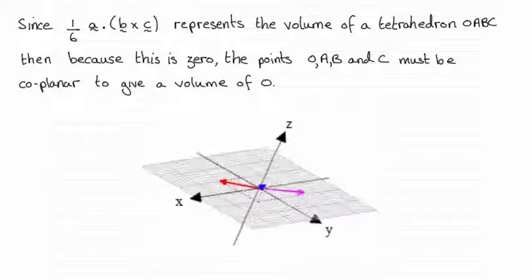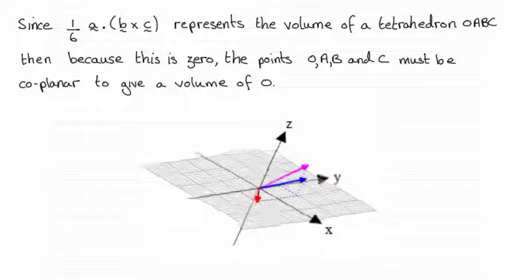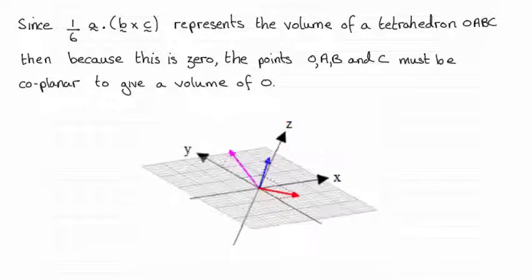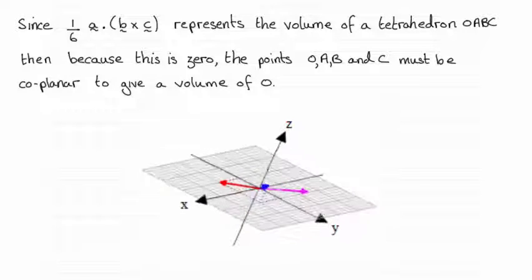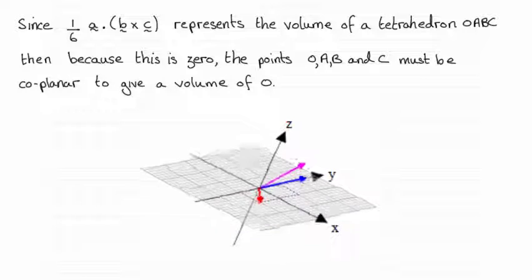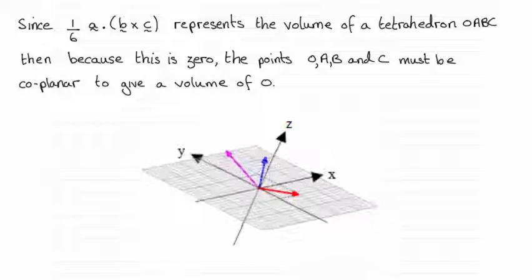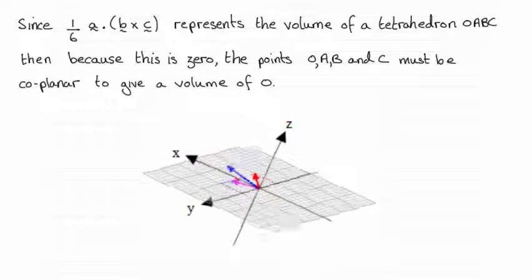So what I've got here is an animation then showing you that the points A, B and C and the origin all lie in a plane. So therefore, as I say, no volume for the tetrahedron. Okay?